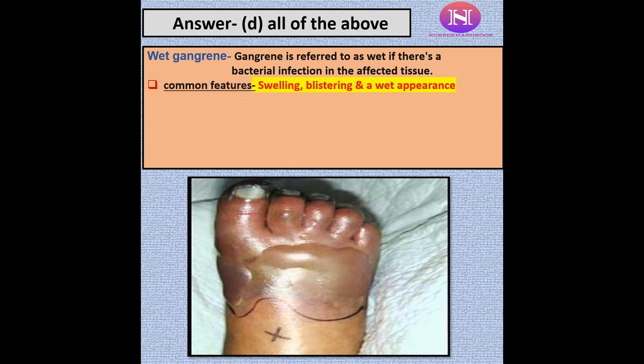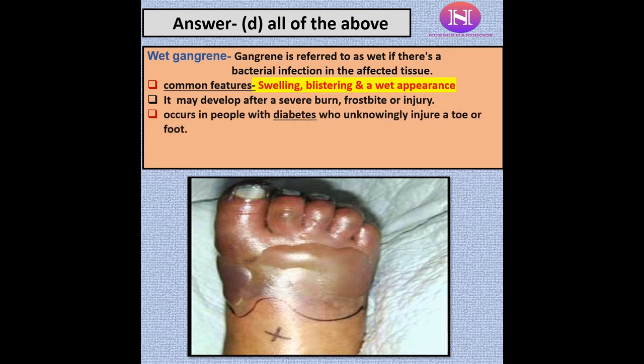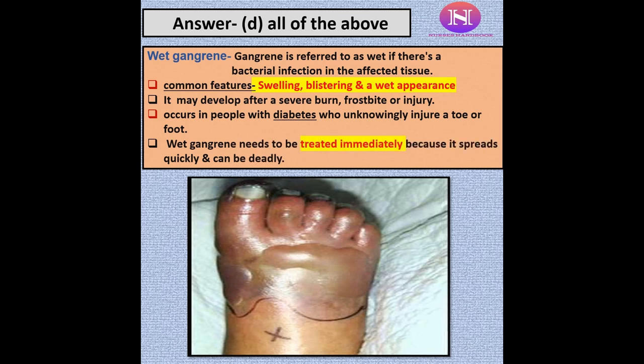The most common features are swelling, blistering, and wet appearance. It develops mostly after a severe burn, frostbite, or injury, and is also seen in diabetic patients who unknowingly injure a toe or foot. It must be treated immediately as it spreads quickly and can be deadly.